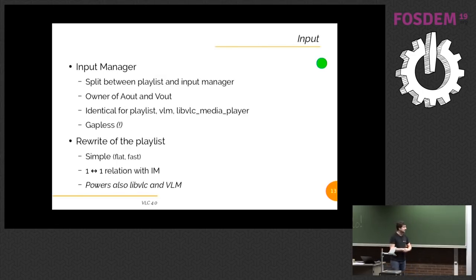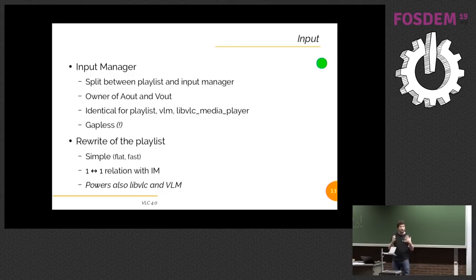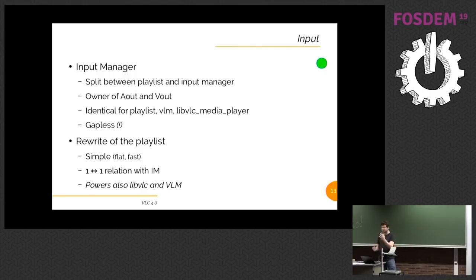By an actual playlist, I mean something that is flat with one next, and not the horrible tree in the VLC playlist, which was amazing because there was only one tree but also at the same time a flat representation — an amazing design that almost none of us ever understood correctly. We are also making this consistent for the VLM, which handles multiple inputs for VLC, for libVLC, and for the main VLC. That's going to simplify a lot, and also it has a nice feature: now we understand that code base.